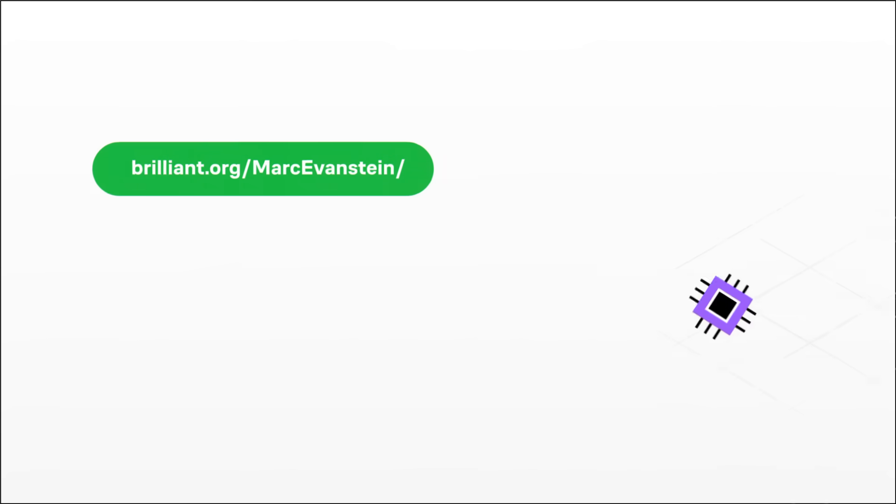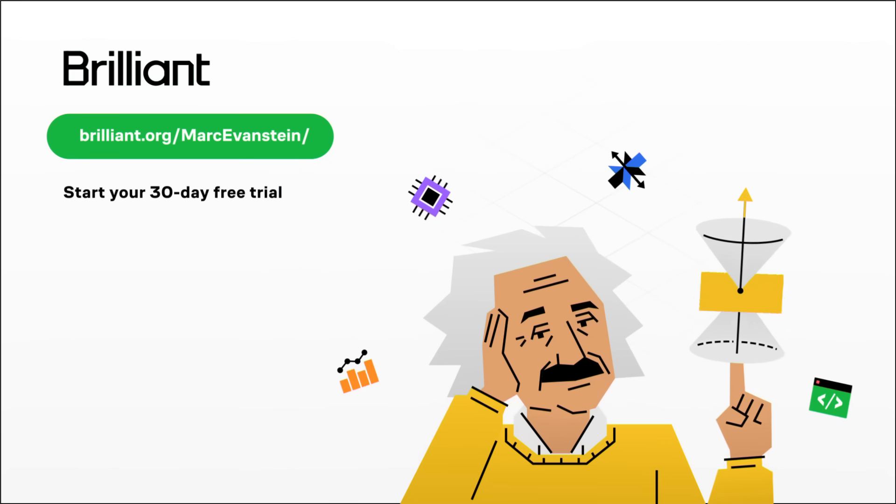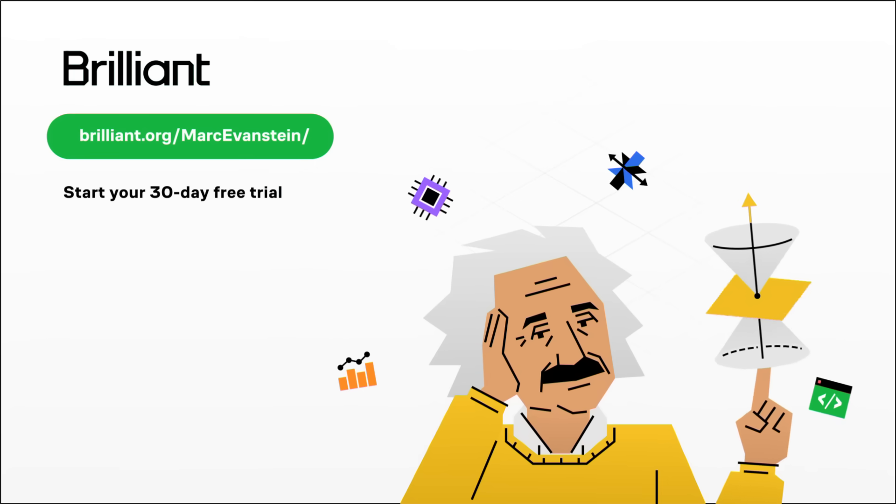To try Brilliant for free for a full 30 days and get 20% off an annual premium subscription, visit brilliant.org/MarkEvanstein or click the link in the description. Just checking it out supports my channel and I bet you'll love what you discover.